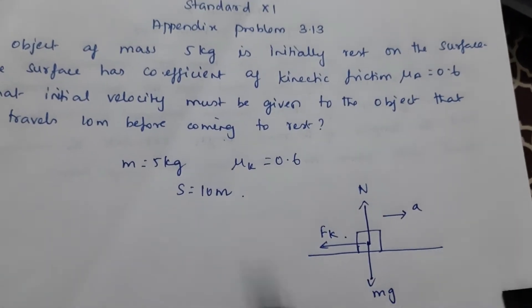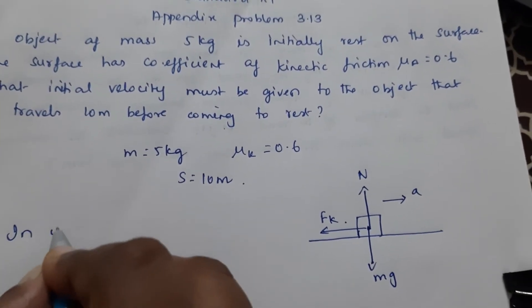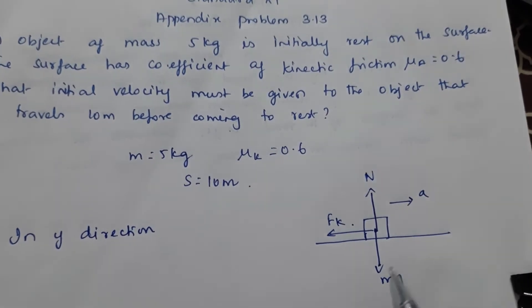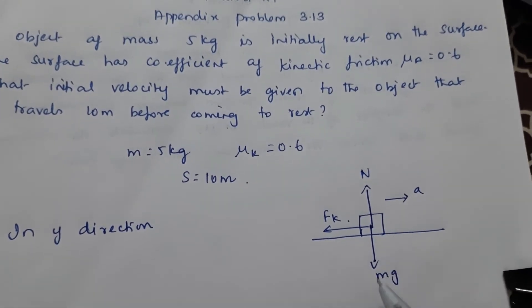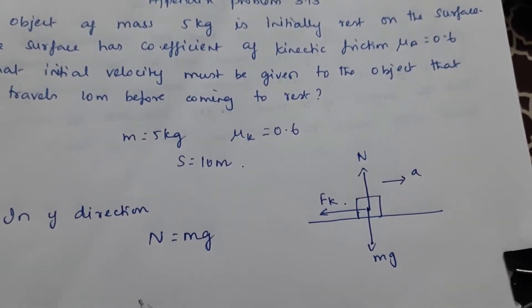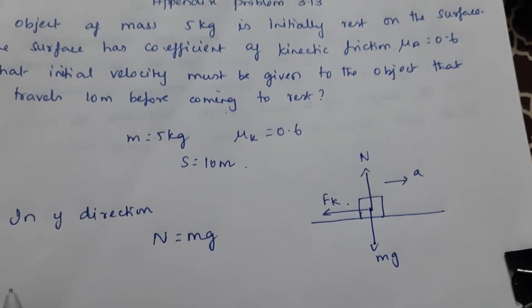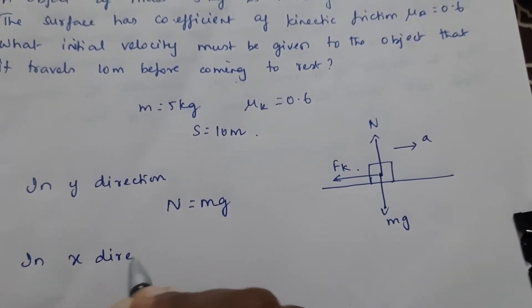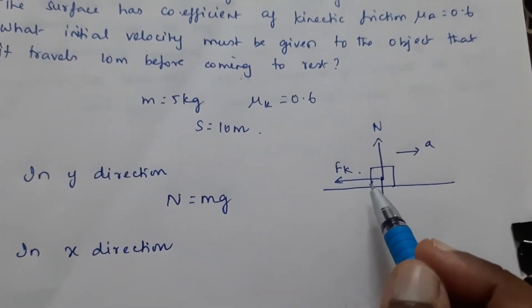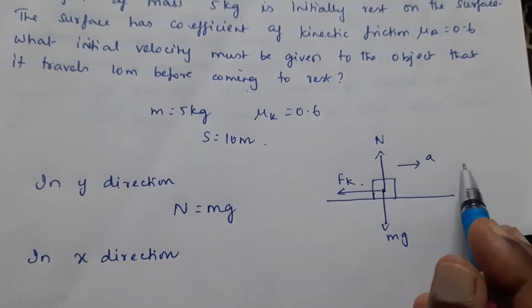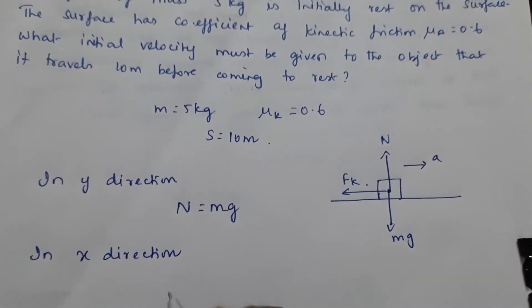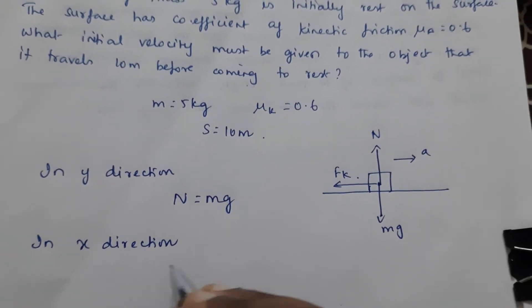Now in y direction, the magnitude of the normal force is equal to that of the magnitude of the gravitational force. So we can write N is equal to mg. Now in x direction, the object is accelerating. The object is accelerating in the positive x direction. The frictional force is acting in the opposite direction.